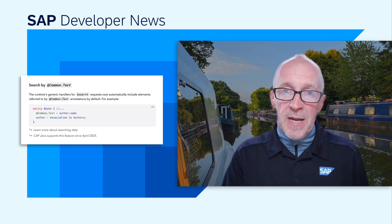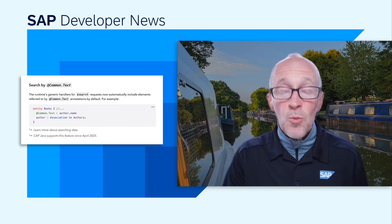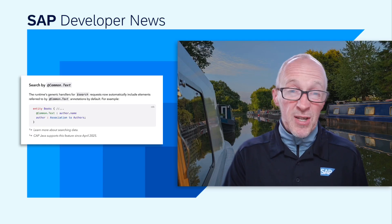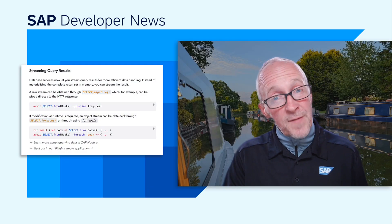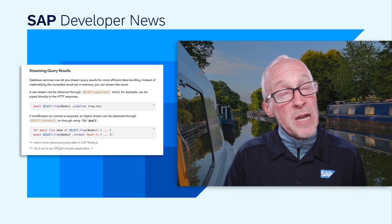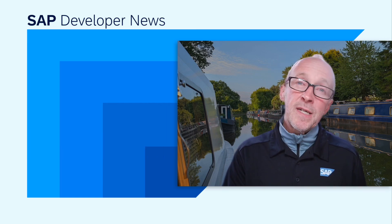Moving to the Node.js and Java runtimes, there are plenty of updates too. Starting with Node.js: there's a feature first introduced in the Java runtime back in April this year that has now been made available in Node.js — it's how elements annotated with common.txt are automatically included when a dollar-search request is processed. There's also a new database service-level feature that allows you to stream query results direct from the persistence layer to the HTTP response, bypassing any need to materialize the result set in memory. There are also new features relating to requiring and connecting to remote services, a new utility method for working with linked definitions, and a new container for authentication-related information: cds.user.authinfo.